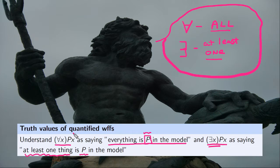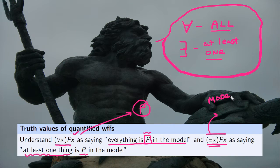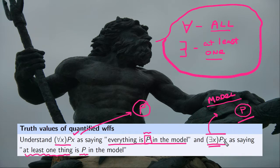For a universally quantified formula, we check to see if everything in the model is in the interpretation of P. If it is, then this particular formula is true; if it isn't, then AXPX is false. Similarly, for an existentially quantified expression, we look at the domain of discourse and the interpretation, and check if any items from the model are in the interpretation of P. If they are, then the formula is true; if there isn't any, then the formula is false.